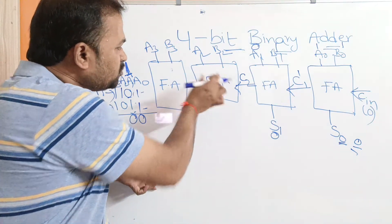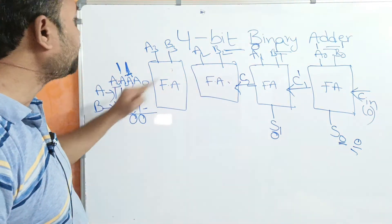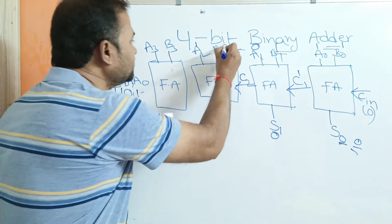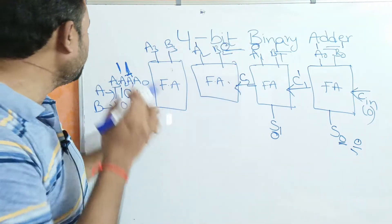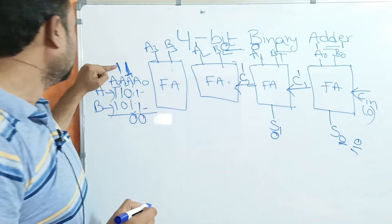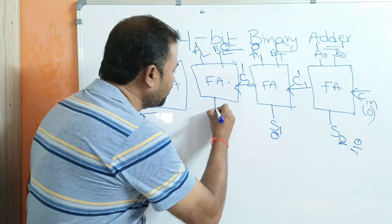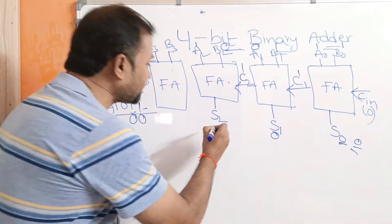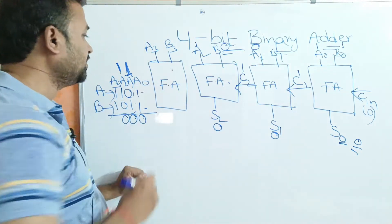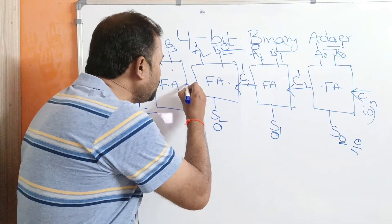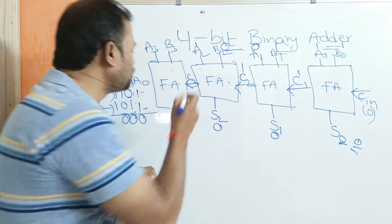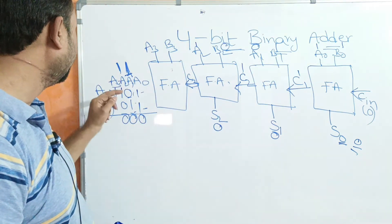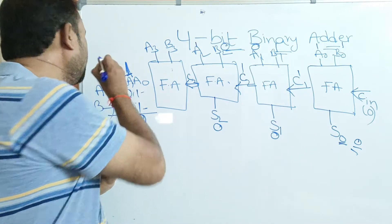The inputs to the third full adder are A2, B2, and C2. A2=1, B2=0, and C2=1. So 1+0+1 gives 0 with a carry of 1, producing S2=0. That output carry is supplied as input carry to the next full adder.